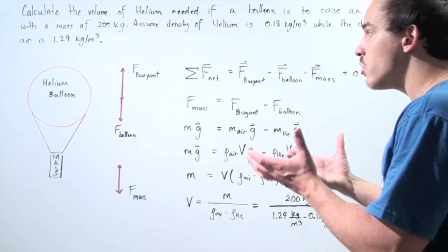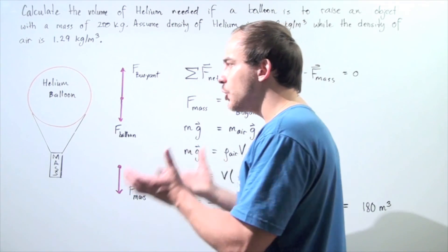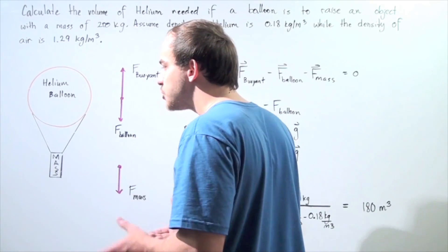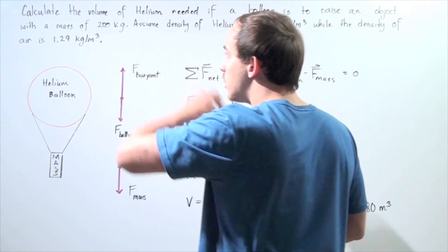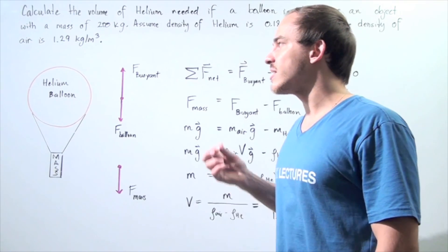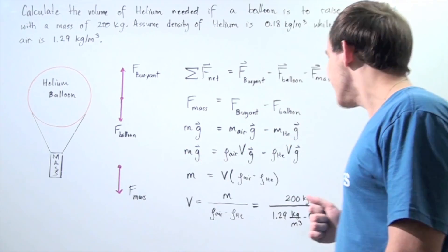So in order for our helium-filled balloon to raise an object that has a mass of 200 kilograms with zero acceleration but a constant velocity, the volume of that balloon has to be 180 meters cubed.